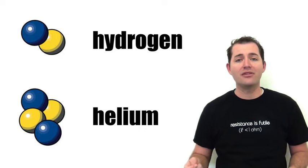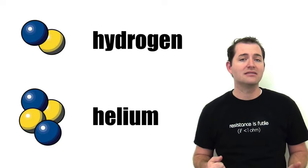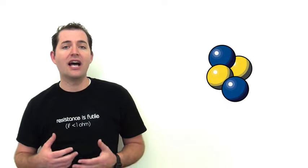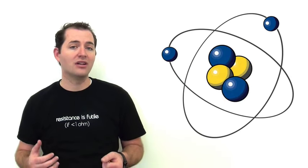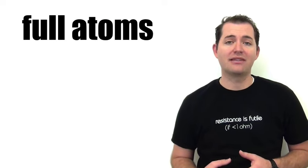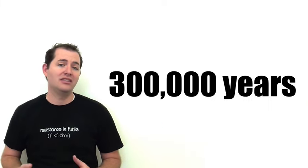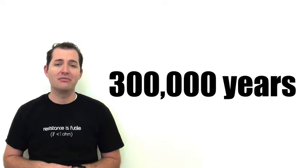The first elements to form were hydrogen, helium, and a few other trace elements. Eventually, after more cooling and expansion, the hydrogen and helium nuclei were able to attract and hold on to electrons. This allowed them to form full neutral atoms as we have on our periodic table today. The formation of neutral atoms took until about 300,000 years after the big bang.